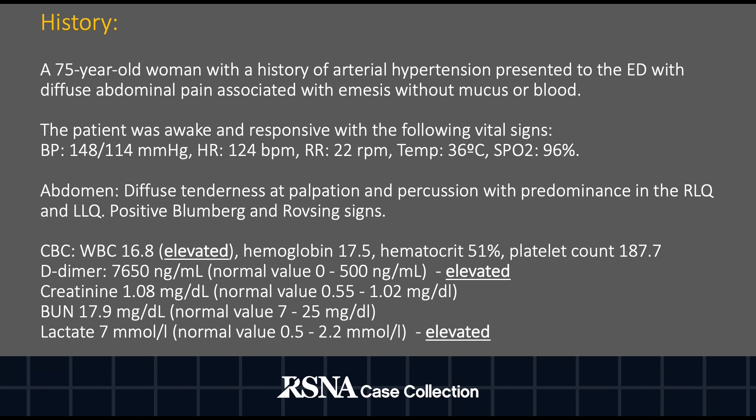Physical abdominal examination showed diffuse tenderness at palpation and percussion with predominance in the right lower quadrant and left lower quadrant. Positive Blumberg and Rovsing signs were also present. CBC showed elevated white blood count with elevated D-dimer and elevated lactate.